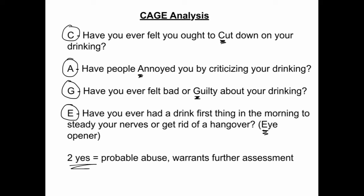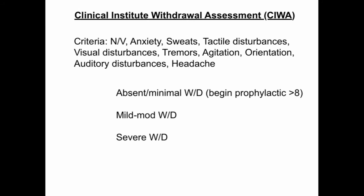Two yes answers indicates probable alcohol abuse and warrants further assessment. The Clinical Institute Withdrawal Assessment, or CIWA scale, is used to assess alcohol withdrawal. The criteria include nausea, vomiting, anxiety, sweats, tactile and visual disturbances, tremors, agitation, orientation, auditory disturbances, and headache. A score of 0-9 indicates absent or minimal withdrawal, with prophylactic treatment beginning at greater than 8. A score of 10-19 indicates mild to moderate withdrawal, and greater than 20 indicates severe withdrawal.